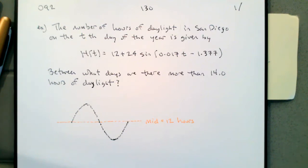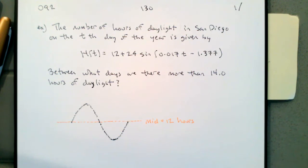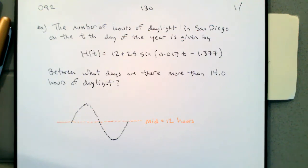It's kind of like in physics class when you ignore friction and air resistance. You do that because you're trying to learn physics and you have to start somewhere — friction complicates things. Same idea here: the middle might not be exactly 12 hours because we're not on the equator, but we'll go with 12 hours anyway to keep the model simpler.